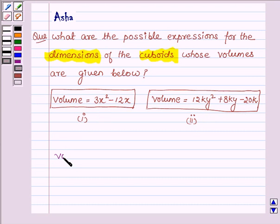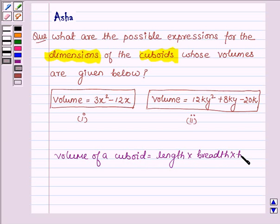As we know, the volume of a cuboid is equal to the length times breadth times height. So what we will try to do in this problem is write these volumes as the product of three factors such that one is length, another is breadth, and the other is height.